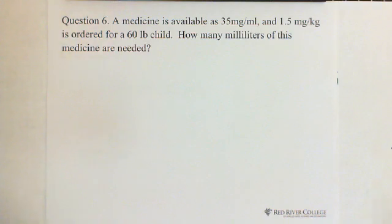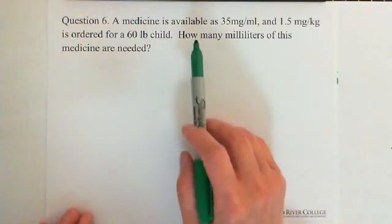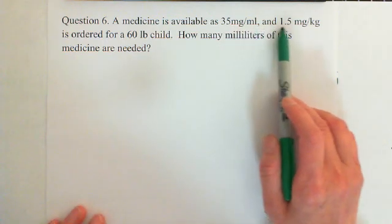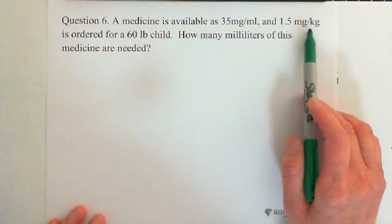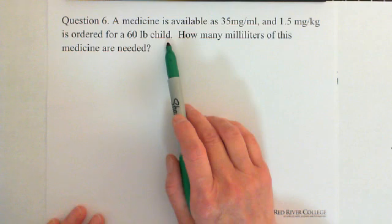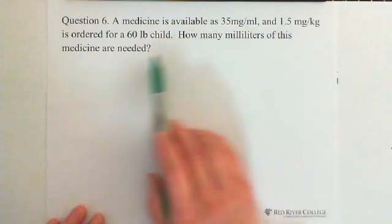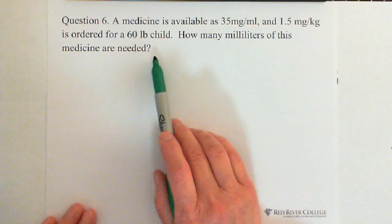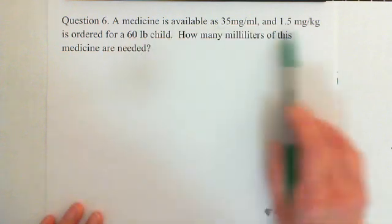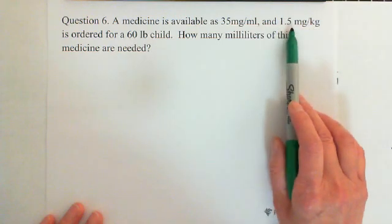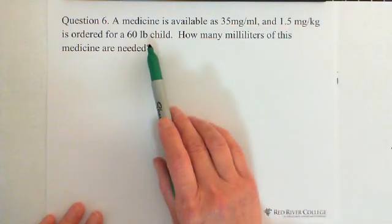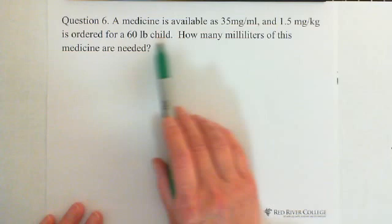The last question: a medicine is available as 35 milligrams per milliliter, and 1.5 milligrams per kilogram is ordered for a 60-pound child. How many milliliters of this medicine are needed? This question is also related to body weight, so we first need to find how many milligrams of medicine the child needs.